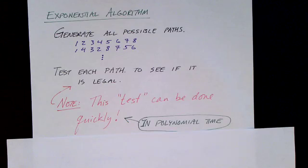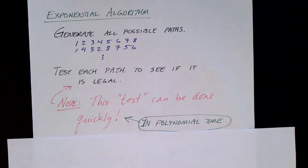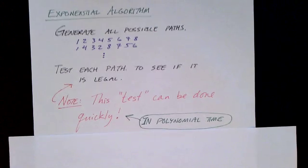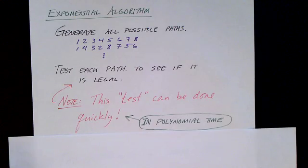The previous path problem that we looked at was in class P, and we know that because we provided a polynomial time algorithm to find a path. The Hamiltonian path problem, though, is different. We know it's an exponential problem because we can provide an algorithm that will solve this in exponential time. But the question about whether it can be solved in polynomial time is a different question.